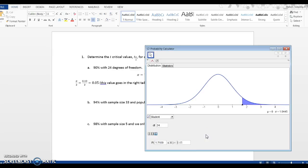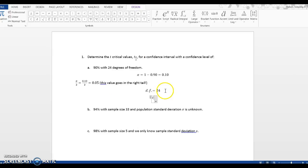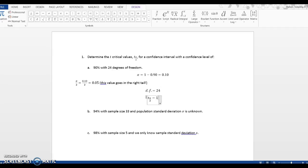There I've got 1.7109, that's my confidence interval which gives me my critical value. So T sub alpha over 2 is going to be equal to 1.7109.